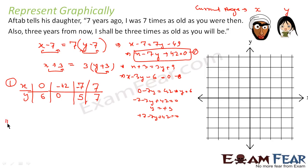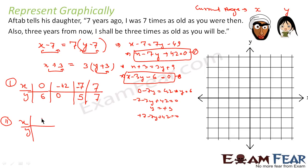For equation 2, which is x minus 3y minus 6 = 0: putting x = 6 gives 6 minus 3y minus 6 = 0, so 3y = 0, meaning y = 0. So the first point is (6, 0).